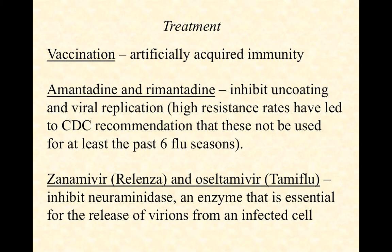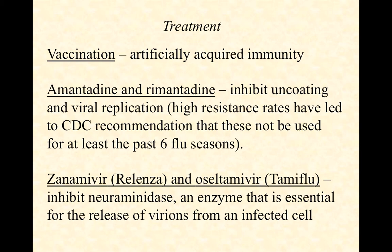Influenza is a vaccine-preventable disease. Public health officials get it right far more often than not, and the risks of not being vaccinated far outweigh the risks of vaccination. Vaccination is artificially acquired immunity — building immunological memory without experiencing illness. Once someone is infected, we have two categories of anti-influenza drugs. Amantadine and rimantadine are viral replication inhibitors that stop the virus from uncoating and replicating, but high resistance rates have led to CDC recommendations that these not be used for the past seven consecutive flu seasons.